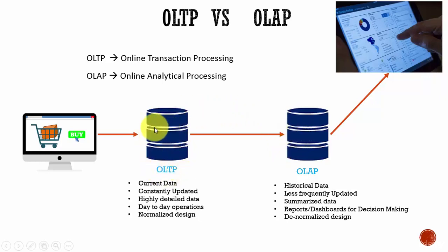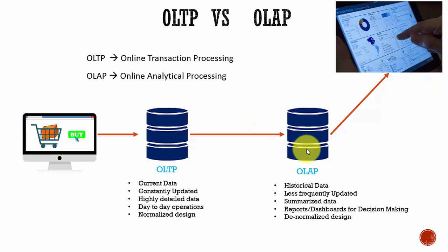For example, instead of storing the detailed sales data present in the OLTP database, we will store just the sales count, the sales amount, by customer, by month. We are just summarizing the sales data and storing it at a summarized level.